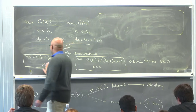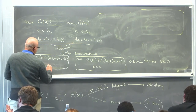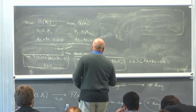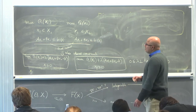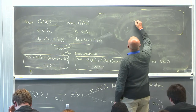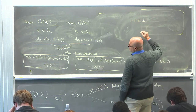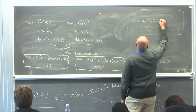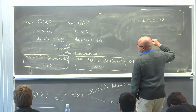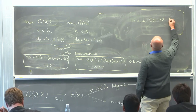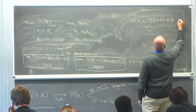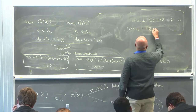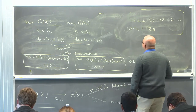For this case, I'll drop the individual constraints and just make it x1 greater than or equal to 0 and x2 greater than or equal to 0, to make it easy. Now if you write down the optimality conditions of the first problem you get the complementarity conditions, and for the second problem similarly.